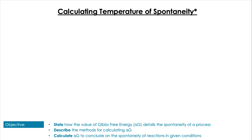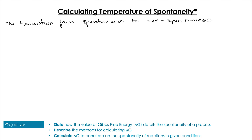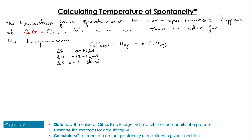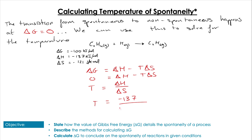We can actually calculate the temperature at which spontaneity begins for reactions that change spontaneity with temperature. This transition happens when ΔG equals zero. Rearranging ΔG = ΔH − TΔS and setting it to zero gives T = ΔH / ΔS. Using our reaction: T = −137 divided by (−121 / 1000), remembering to divide by 1000 to convert entropy to kilojoules per kelvin per mole. That equals 1132 kelvin, meaning above that temperature this reaction would not be spontaneous.